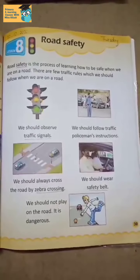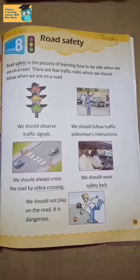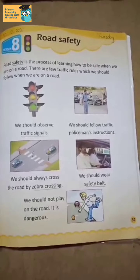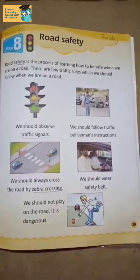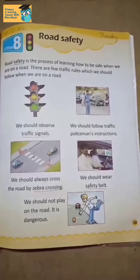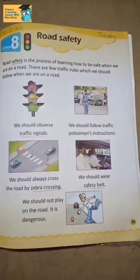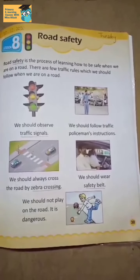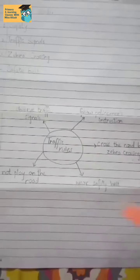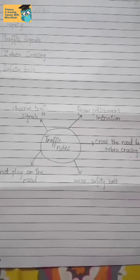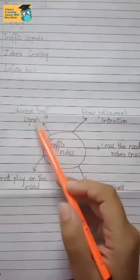What is the meaning of road safety? It is a process of learning — ek aisa learning ka process hai jis se hamei pata chalta hai ki hamei kaise safe rehna hai road ke opar. There are a few traffic rules which we have to follow when we are on a road. Also note down these traffic rules in your notebook.